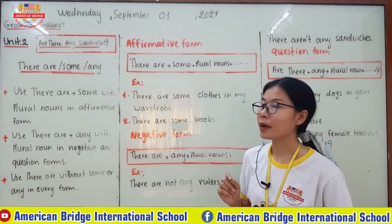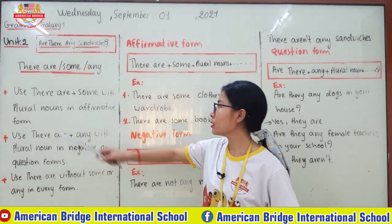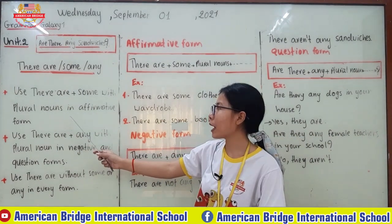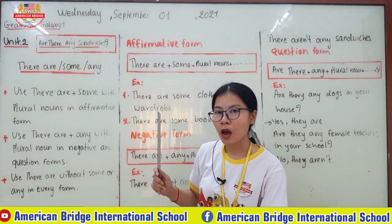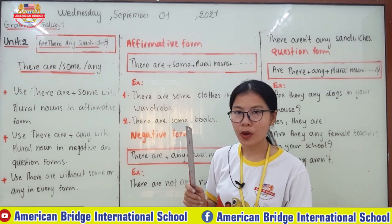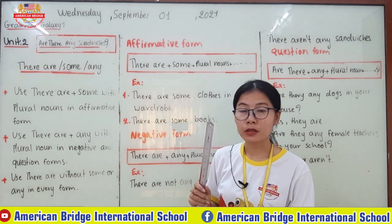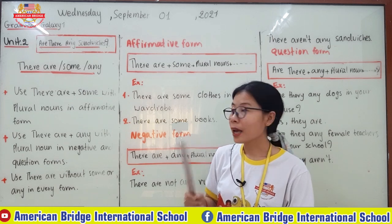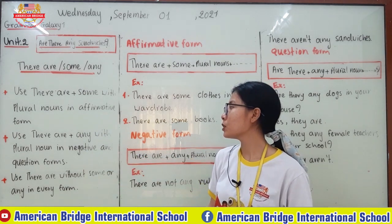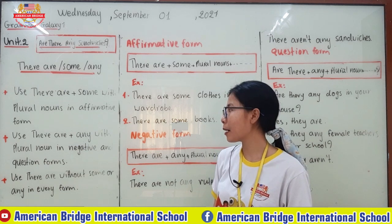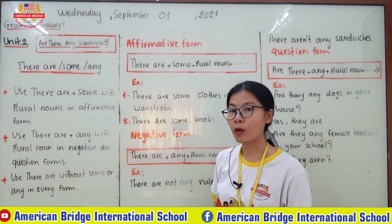Now let's continue with 'some' and 'any' but using 'there are.' Use 'there are' plus 'some' with a plural noun in affirmative form. When you use 'there are' plus 'some,' you have to use it with plural nouns — not singular or non-count nouns. The form is still affirmative. Then you use 'there are' plus 'any' with a plural noun in negative and question form.